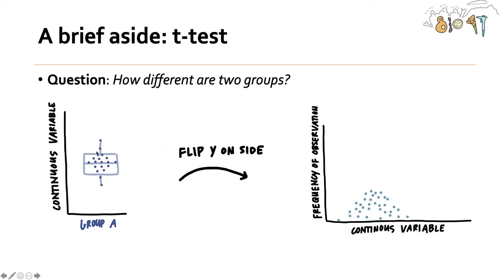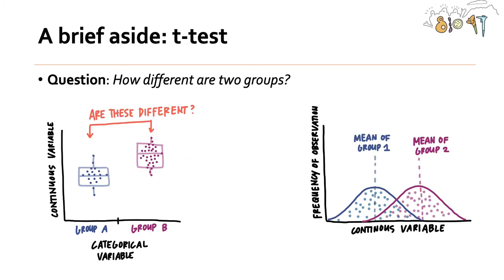If you think about just group A, you can think about the distribution of those observations, where you have your continuous variable on one axis and the frequency of each observation on another, so you get some distribution. That distribution has a mean, and what we're doing when we do a t-test or an ANOVA is comparing the means of the continuous variable across different groups and asking: are those means significantly different from each other?